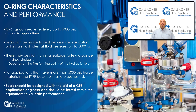Within a properly designed and machined O-ring groove, an O-ring will effectively seal in a static application up to 5,000 psi. Seals can also effectively seal between reciprocating pistons and cylinders at fluid pressures up to 5,000 psi, though there may be slight running leakage depending on the film-forming ability of the hydraulic fluid. For applications with pressures higher than 5,000 psi, harder materials and the use of PTFE backup rings offer effective sealing performance.